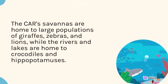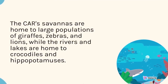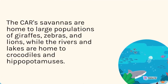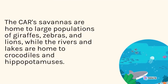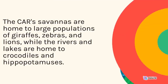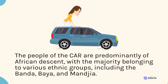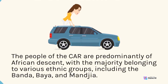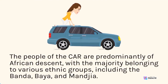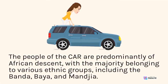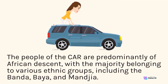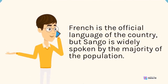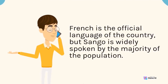The CAR's savannas are home to large populations of giraffes, zebras, and lions, while the rivers and lakes are home to crocodiles and hippopotamuses. The people of the CAR are predominantly of African descent, with the majority belonging to various ethnic groups, including the Banda, Baya, and Mangia. French is the official language of the country, but Sango is widely spoken by the majority of the population.